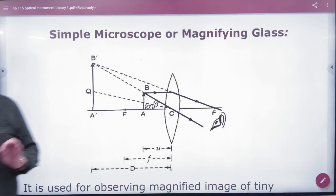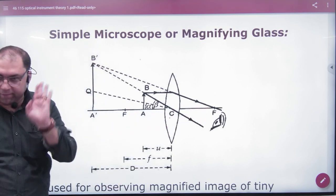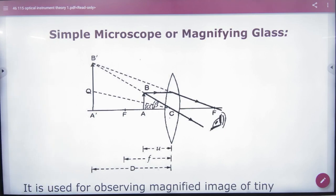The simple microscope that we have done - in that image, where is it? At least distance of distinct vision. This is one case. One other case can come.